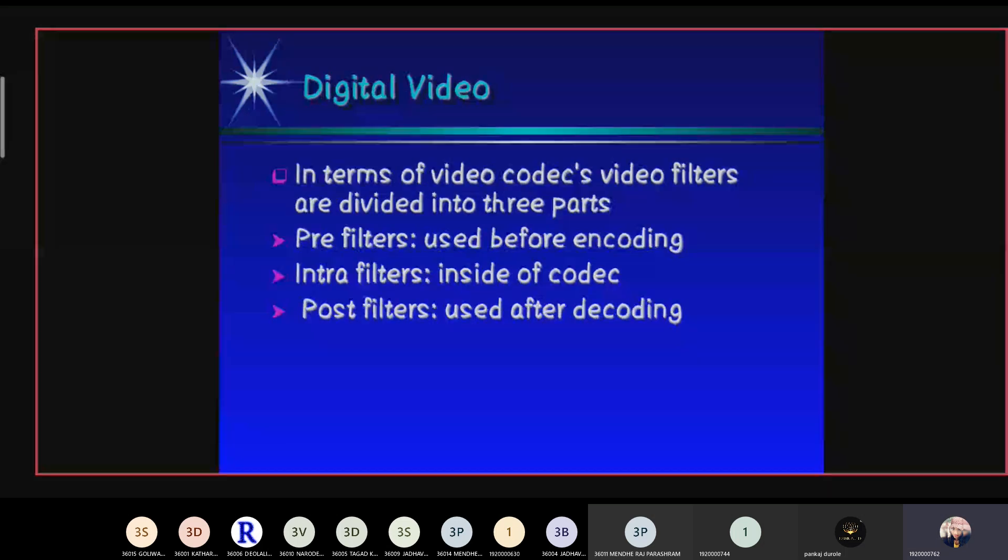In terms of video code, video filters are divided into three parts: pre-filter used before encoding, intra-filter inside the code, and post-filter used after coding. Examples of pre-filter are video denoising, size conversion, contrast enhancement, and deflaking. As intra-filter, in current standards only deblocking is used. Common post-filters include deinterlacing to convert interlaced video to progressive scan, deblocking, and deringing.